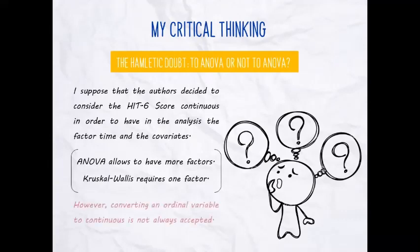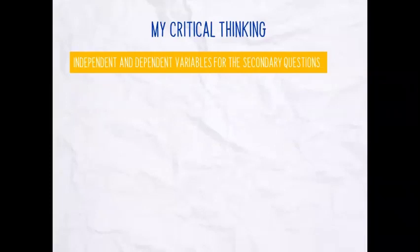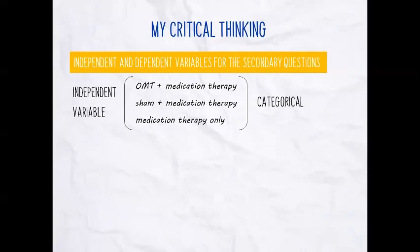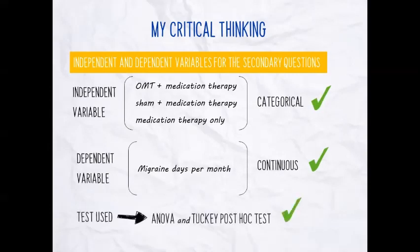Now we move to the secondary questions. The independent variable is always the same — the intervention — and it remains categorical. The first dependent variable is migraine days per month. It is continuous, so they used ANOVA and Tukey post hoc tests, and I completely agree, because in this case the dependent variable was truly continuous.